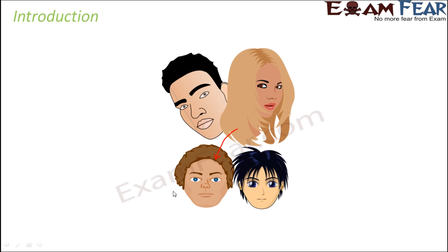Another interesting thing is that it is not only the immediate parents whom a kid resembles. The kid also resembles his ancestors — for example, the kid might resemble his grandfather or grandmother, or even his great-grandfather. So traits do not necessarily have to come from immediate parents; they can also come from ancestors.